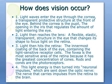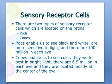Rods and cones are the photoreceptors in the retina. Light energy is turned into neuronal impulses which are sent down the optic nerve to the brain. Rods enable us to see black and white, are more sensitive to light, and there are 100 million in each eye. Cones enable us to see color, work best in bright light, number about 6.5 million in each eye, and are located mostly at the center of the eye.